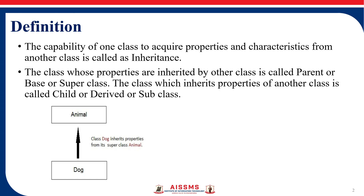The class from which the properties are inherited by another class is called the parent, base, or super class. The class that inherits the properties of another class is called the child, derived, or subclass.